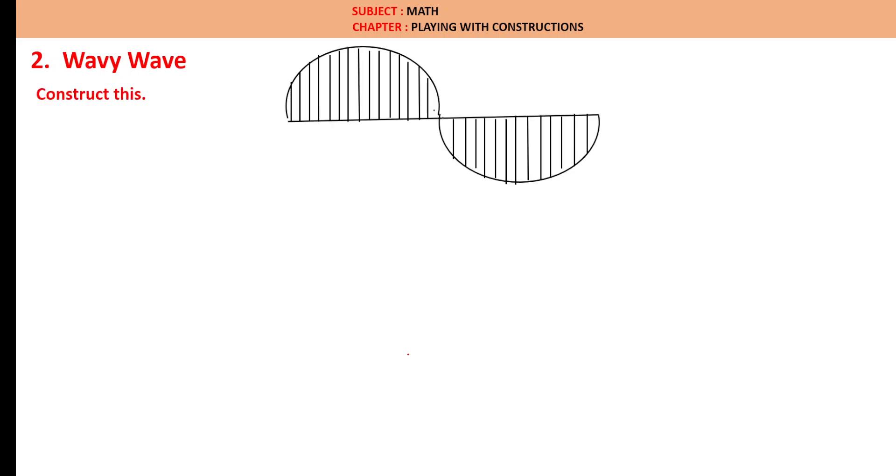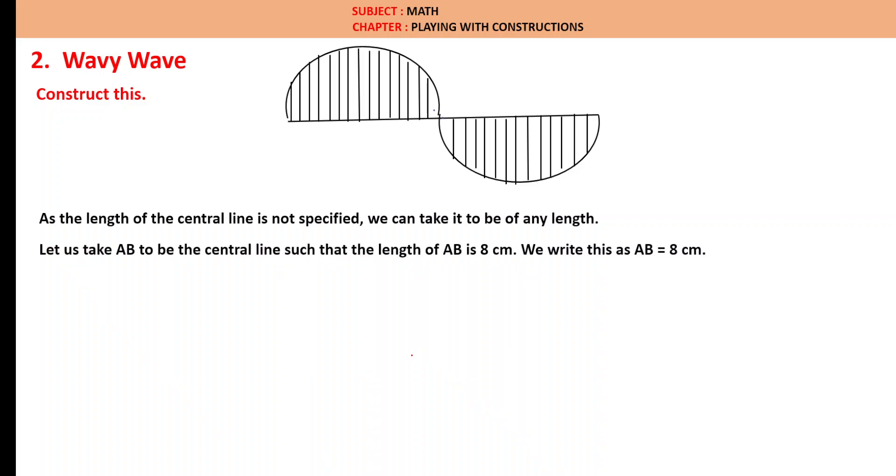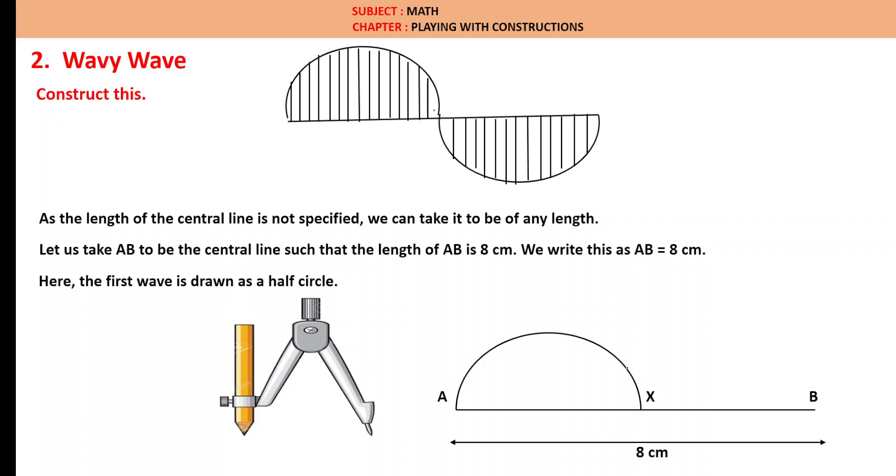Second one: Construct wavy line. We need to construct this. As the length of the center line is not specified, we can take it to be of any length. Let us take AB to be the center line, such that the length of AB is 8 cm. Here, the first wave is drawn as a half circle. We will take this compass and draw a half circle. As AB is total 8 cm, we have to draw first half circle AX.